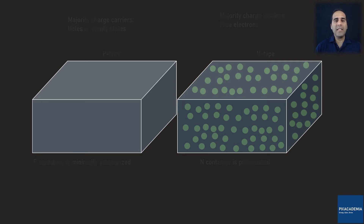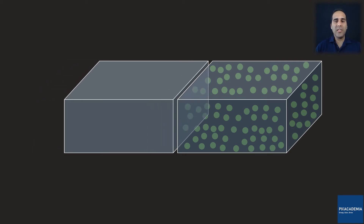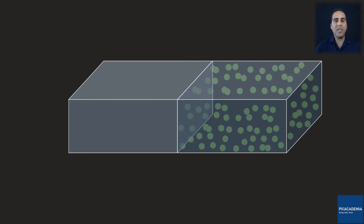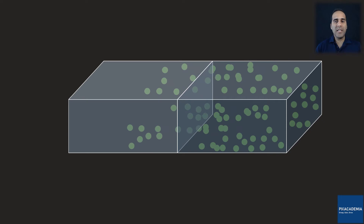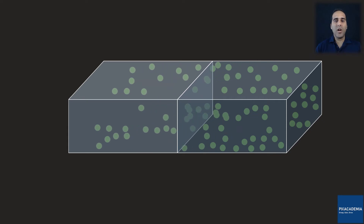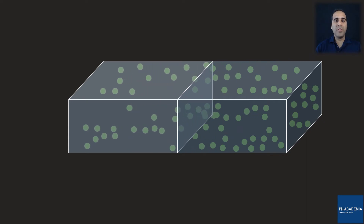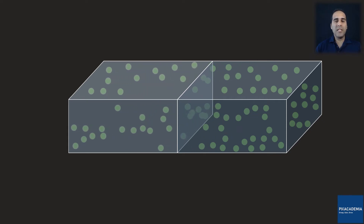When the P and N containers are connected, gas molecules from the N container are sucked or diffused into the P container. This diffusion stops when the pressure between the two containers is balanced. Once that happens, we say the containers are in the equilibrium state.